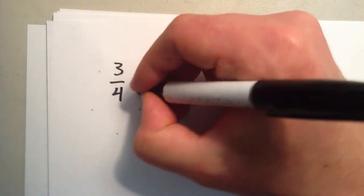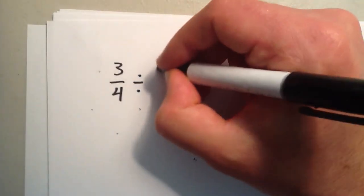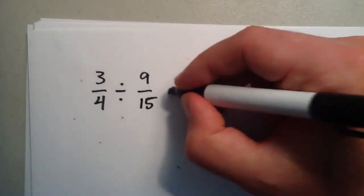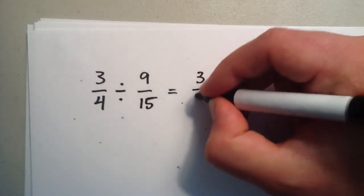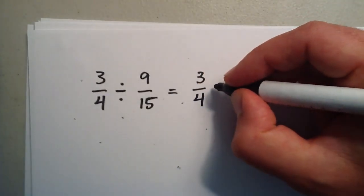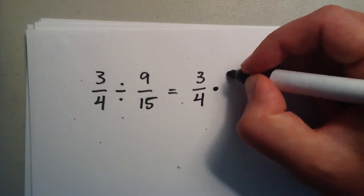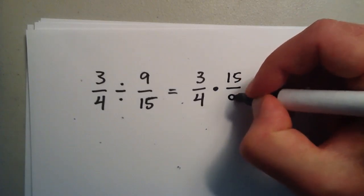So let's do this with some other fractions. Let's do 3 over 4 and we'll just divide that by 9 over 15. So we write the first fraction the same way, and then we change the division sign to multiplication, and we flip the 9 over 15 and write 15 over 9.